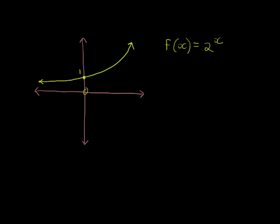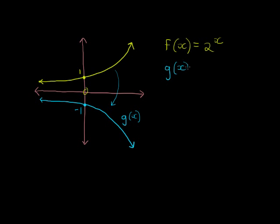What is the function formula if I reflect f(x) in the x-axis? Reflecting in the x-axis means it goes that way. Now instead of intersecting at 1 it intersects at negative 1. This is now g(x) — a new function. g(x) is the reflection of f(x) in the x-axis; all the y values get multiplied by a negative, so g(x) is simply negative 2 to the power of x.